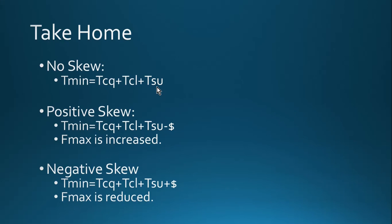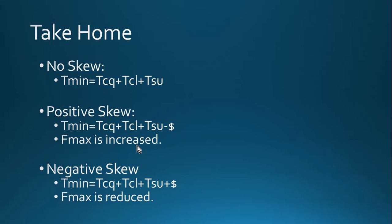To conclude: in the case of no skew, T_min equals T_CQ of the throwing flop plus the combinational logic delay plus the setup time of the capturing flop. In the case of positive skew, T_min is reduced to T_CQ plus T_CL plus T_setup minus δ (the amount of skew added) — so maximum operating frequency is increased. In the case of negative skew, T_min is increased by δ and the operating frequency is reduced.